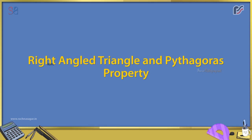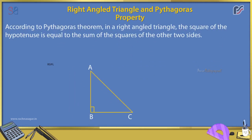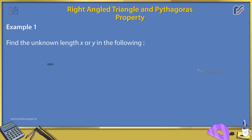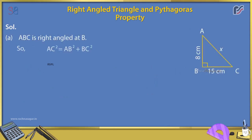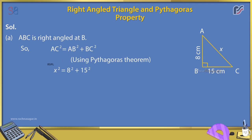Right-angled triangle and Pythagoras property. According to Pythagoras' theorem, in a right-angled triangle, the square of the hypotenuse equals the sum of the squares of the other two sides: hypotenuse² = base² + perpendicular². Example 1A: ABC is right-angled at B. So AC² = AB² + BC². x² = 8² + 15² = 64 + 225 = 289 = 17×17, so x = 17 cm.